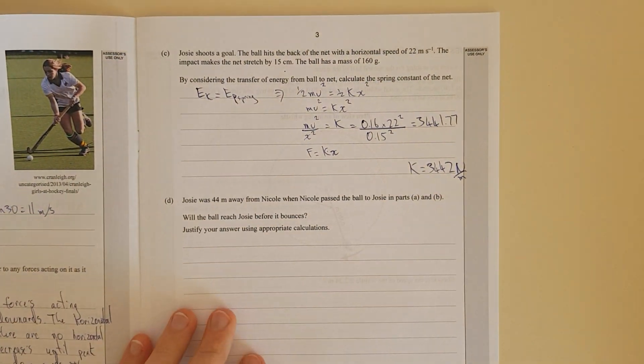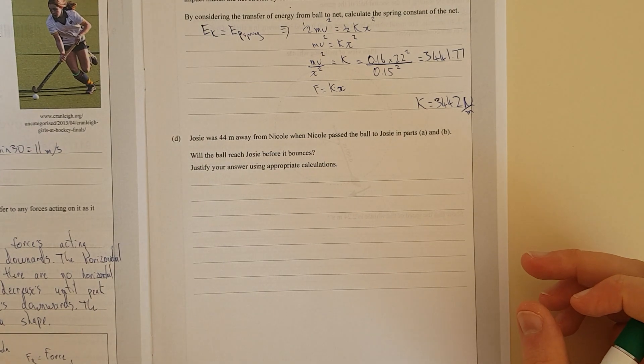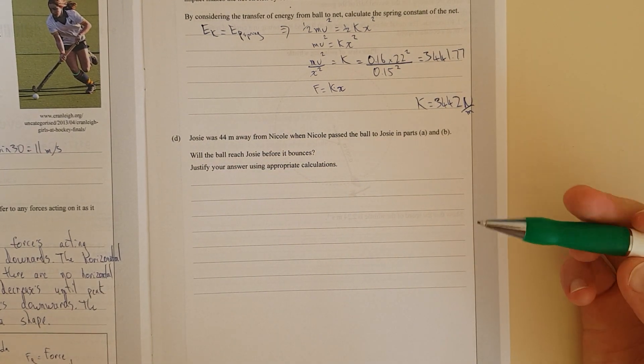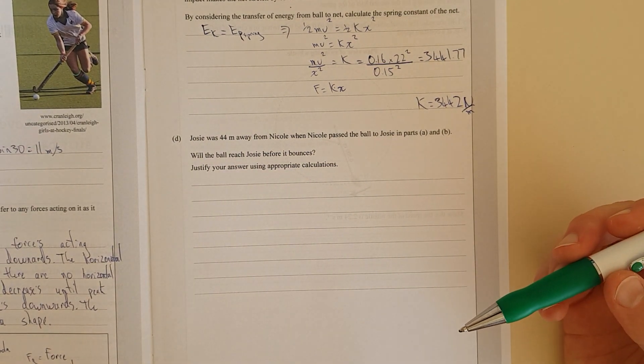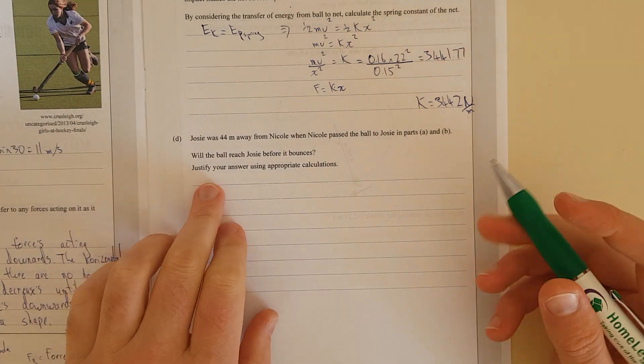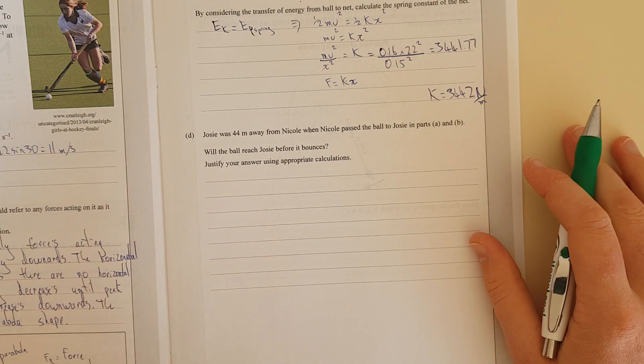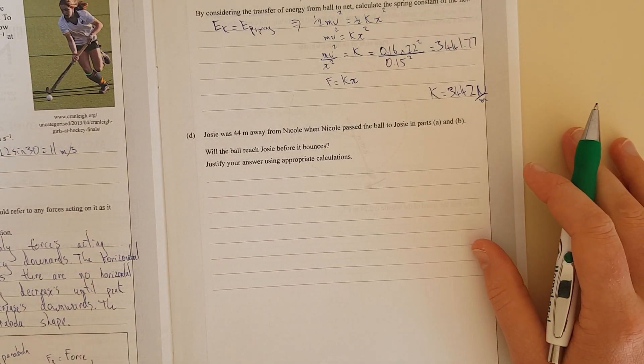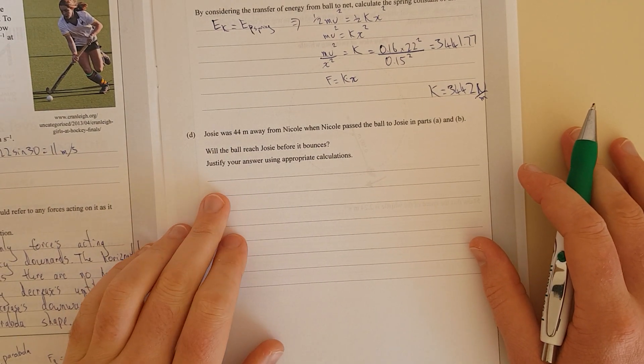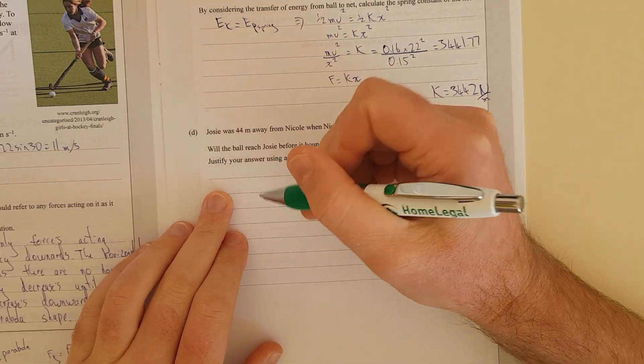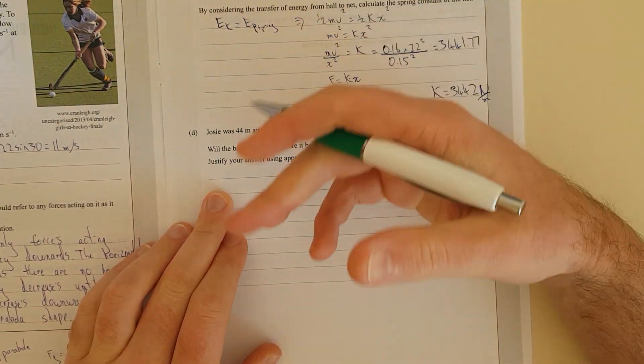Josie was 44 meters away from Nicola when Nicola passed the ball to Josie in parts a and b. Will the ball reach Josie before it bounces? Justify your answer using appropriate calculations. This is a range question. The first thing you do for a range question is find out how long the ball is in flight for, and to do that we find out how long it takes for the ball to get to the top of the flight and then we double it.